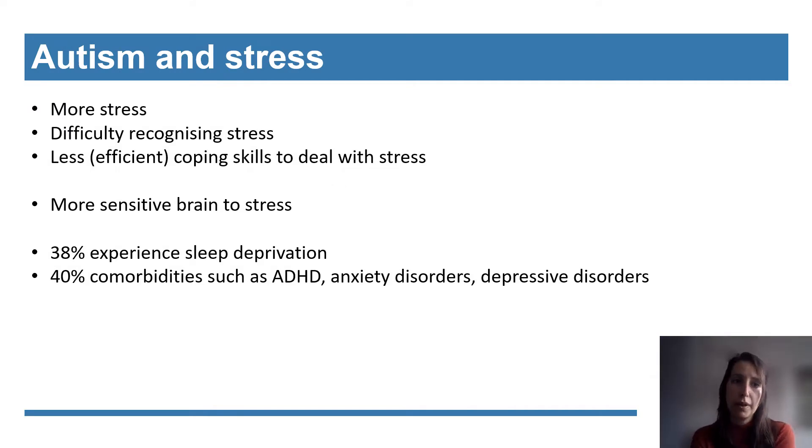People with an autism spectrum disorder experience more daily stress compared to people without autism. This is partly due to a different stimuli processing in the brain, which makes the brain more sensitive to stress. In addition, people with autism may also have difficulty recognizing stress and applying adequate coping mechanisms. Scientific research showed that 38% of people with autism experience sleep deprivation, and 40% have comorbidities such as an anxiety disorder or a depressive disorder.